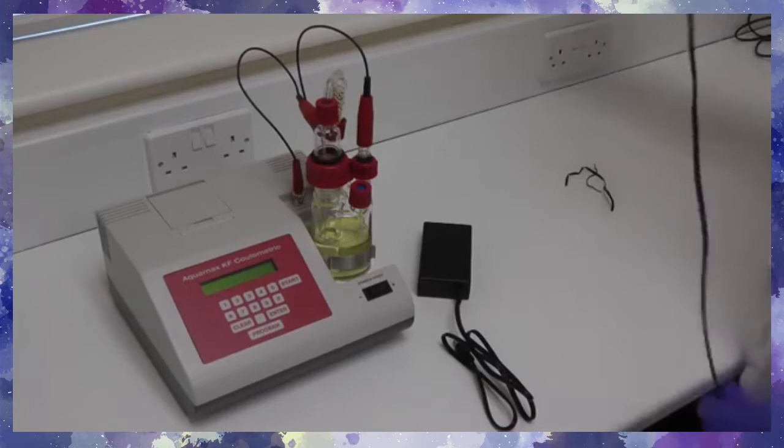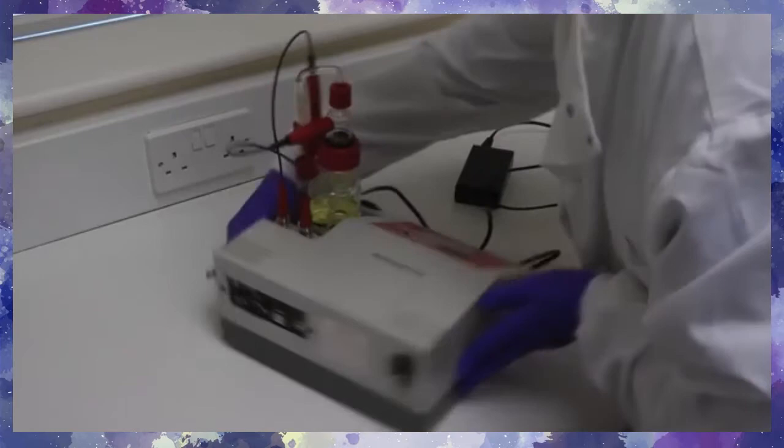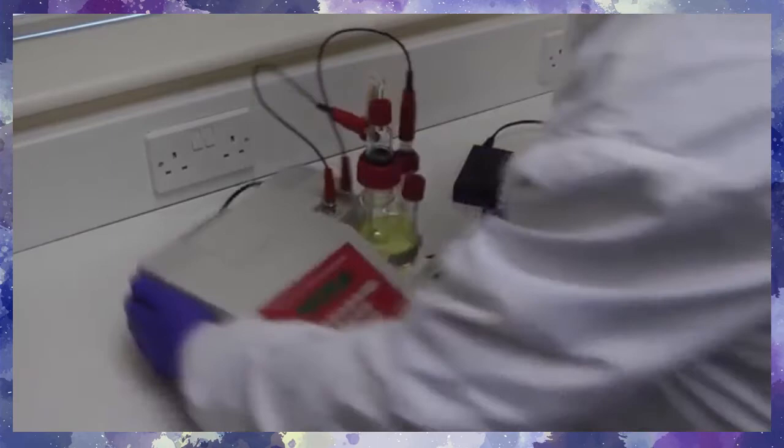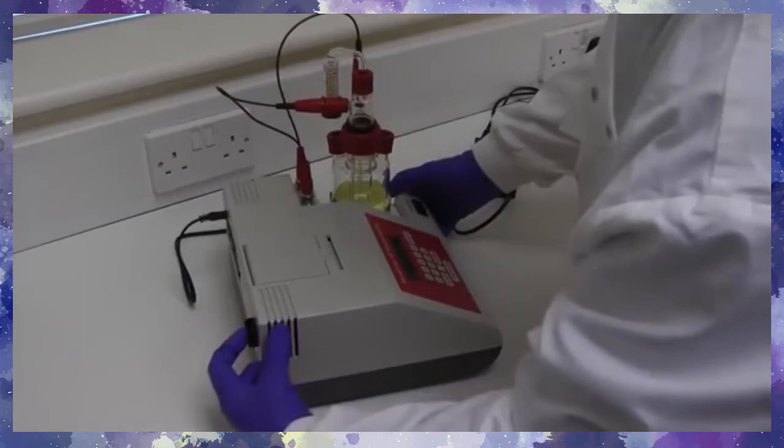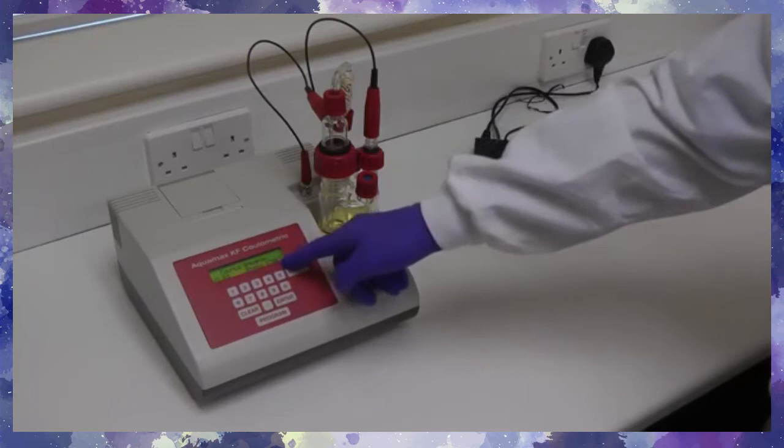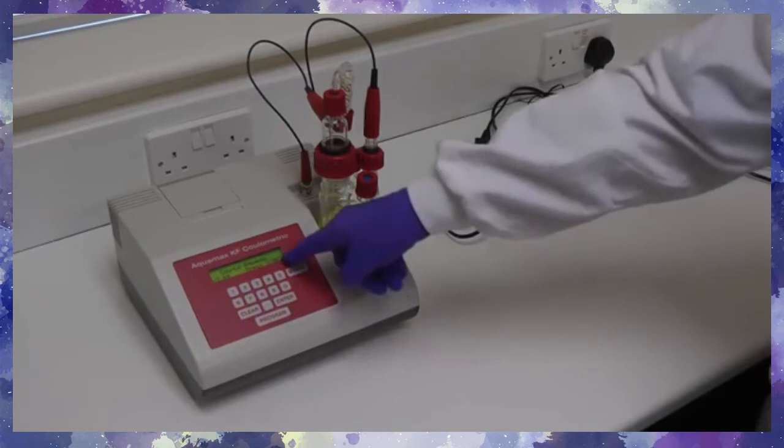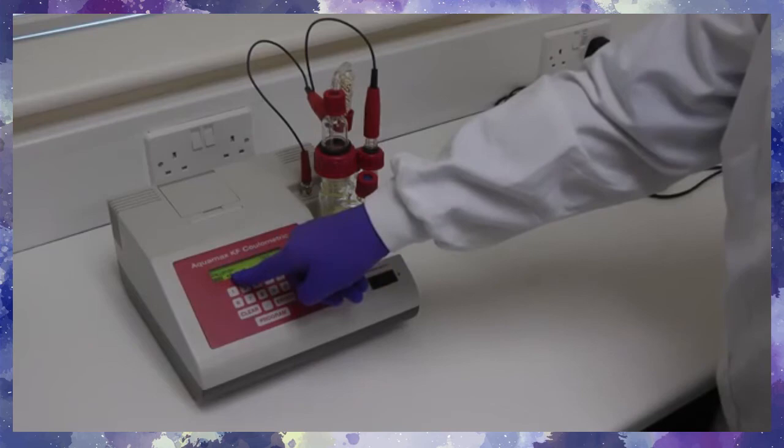To switch the instrument on, connect to the mains electricity supply using the power pack and mains cord. Press the power on switch at the rear of the unit. The instrument will then start to stir automatically, and the display will show the model, the software code, and what the operator is required to do. All other keypad functions are disabled. Press start as requested by the display. The Aquamax KF Moisture Meter begins the precondition process, showing how many micrograms of water have been titrated, the speed of the titration, and the detector signal.